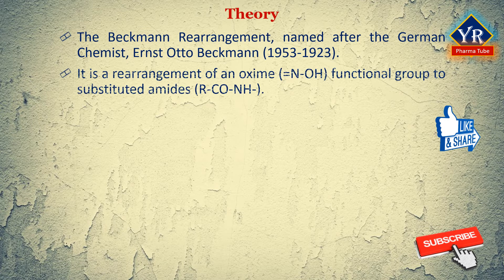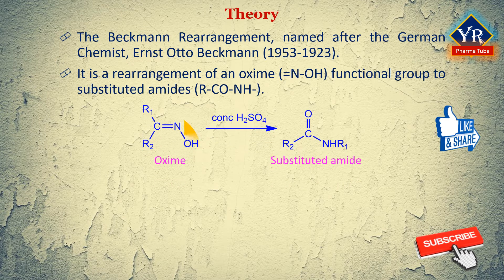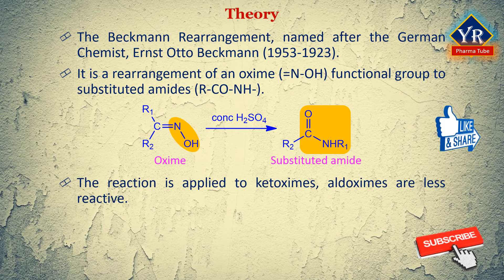It is a rearrangement reaction of an oxime functional group to substituted amides. Thus, the rearrangement of oximes under the influence of acidic reagents to yield N-substituted carboxylic amides is called the Beckman rearrangement reaction.